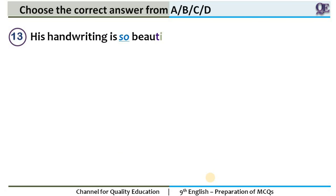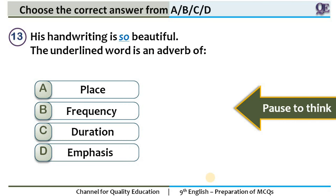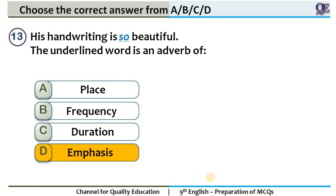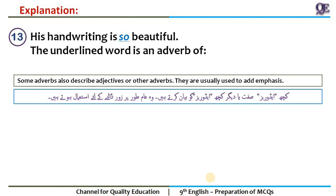Question 13: 'His handwriting is so beautiful.' The underlined word is? 10 seconds. The answer is adverb of emphasis. Some adverbs describe or emphasize an adjective or another adverb. Here 'beautiful' is your adjective. When you use the word 'so,' it becomes an adverb — 'so beautiful.' This adverb is emphasizing 'beautiful,' meaning very beautiful. Since it is emphasizing, you call it adverb of emphasis.